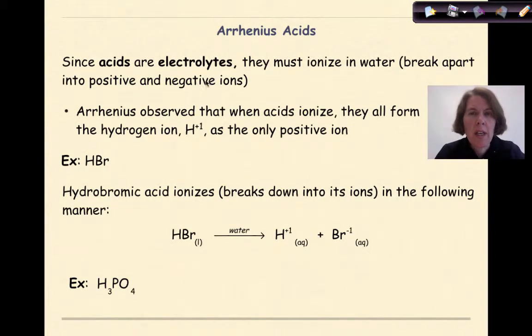Since acids are electrolytes, they must ionize in water, in other words, break apart into positive and negative ions. Arrhenius observed that when acids ionize, they all form the hydrogen ion, H+1, as the only positive ion.